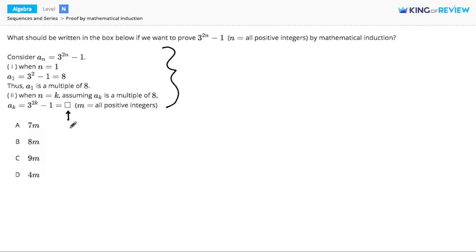We're trying to prove something about the terms of the sequence 3 to the 2n minus 1, where n is all positive integers.